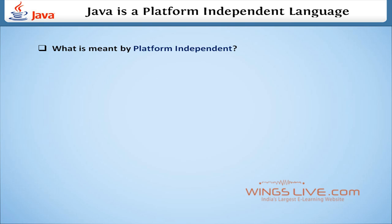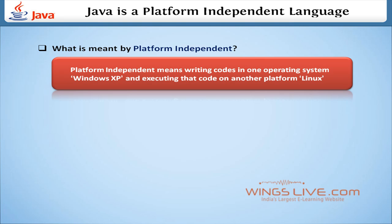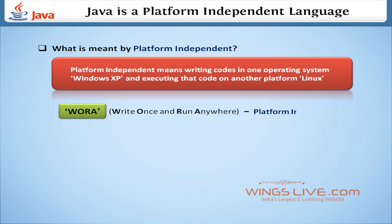First, let's see what is meant by platform-independent. Platform-independent means writing code in one operating system, for example Windows XP, and executing that code on another platform, for example Linux. This is simply called WORA, which means write once and run anywhere. This phenomenon is called platform-independent.